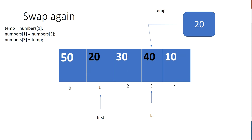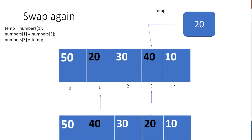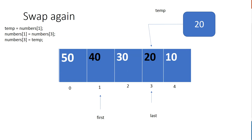So we made a copy of index one in temp, then we put 40 into index one, and then we copy whatever was in temp — which is 20 — into index three. Then we move our first and last pointers over again.